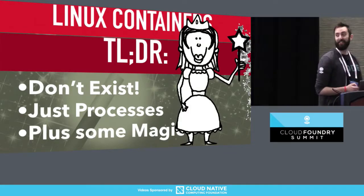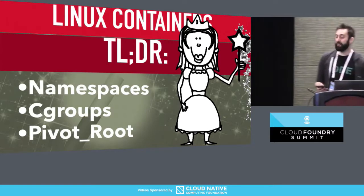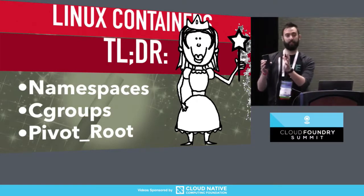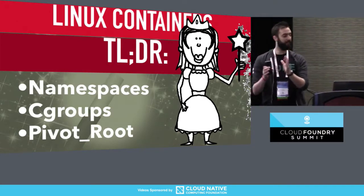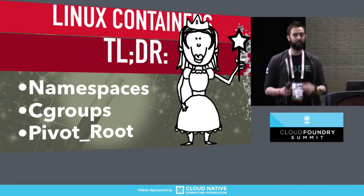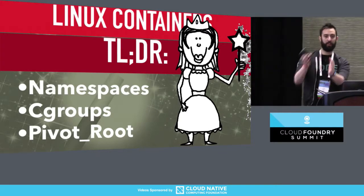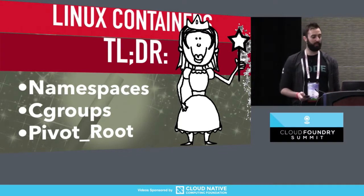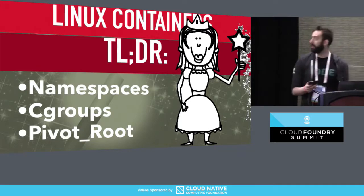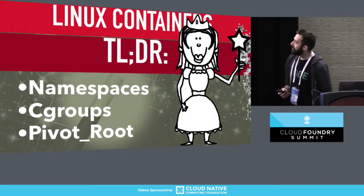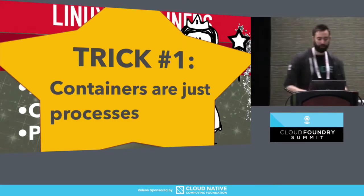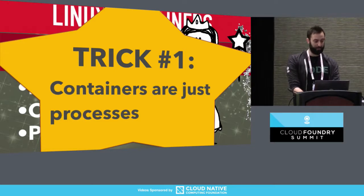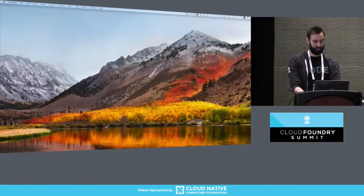What does that magic look like? It's really these things: namespaces, which are the isolation; cgroups, which are the resource sharing; and pivot root, which allows us to swap a file system into a container. So trick one: containers are just processes. And at this point, I'm going to attempt to prove what I just said.